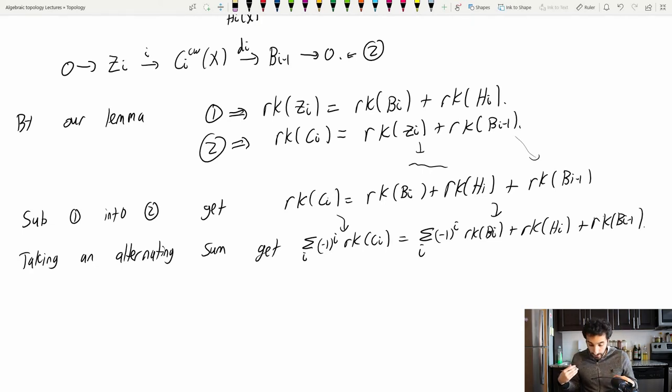And the point here now, so what do I want in the end? Let's just remember, I'm trying to show that the alternating sum of the Ci's is equal to the alternating sum of the Hi's. So what's getting in the way of this theorem right now? What do we wish was gone? We're going to notice all those ranks of Bi's. And in fact, they do disappear. This is like a telescoping sum.